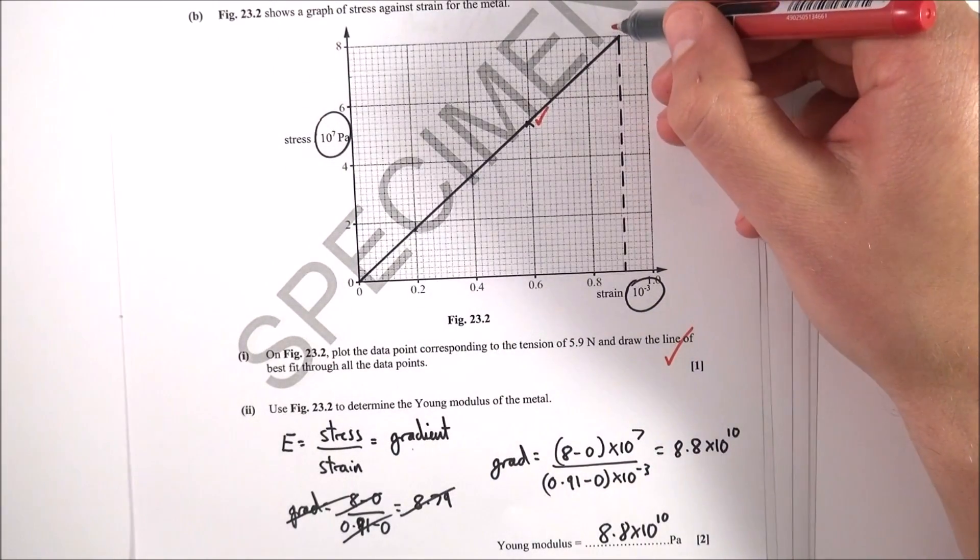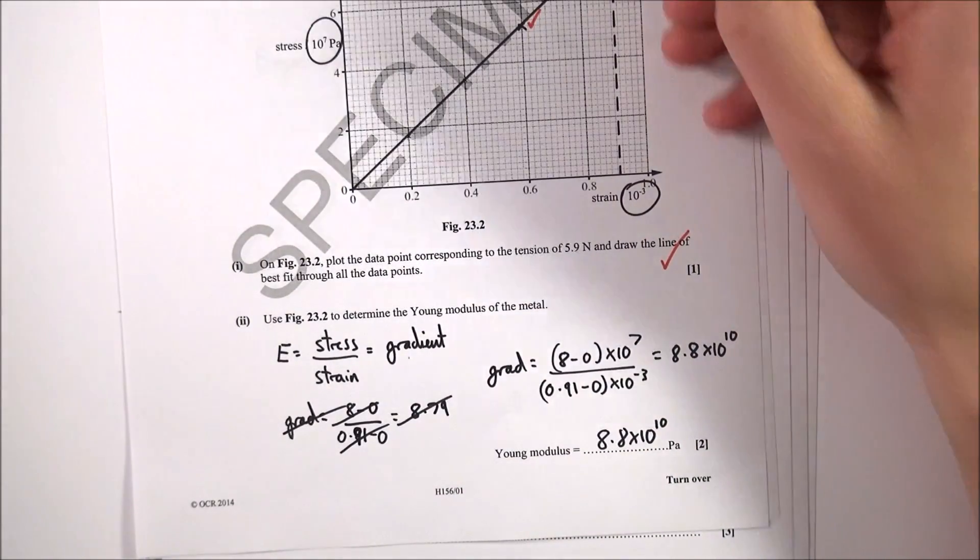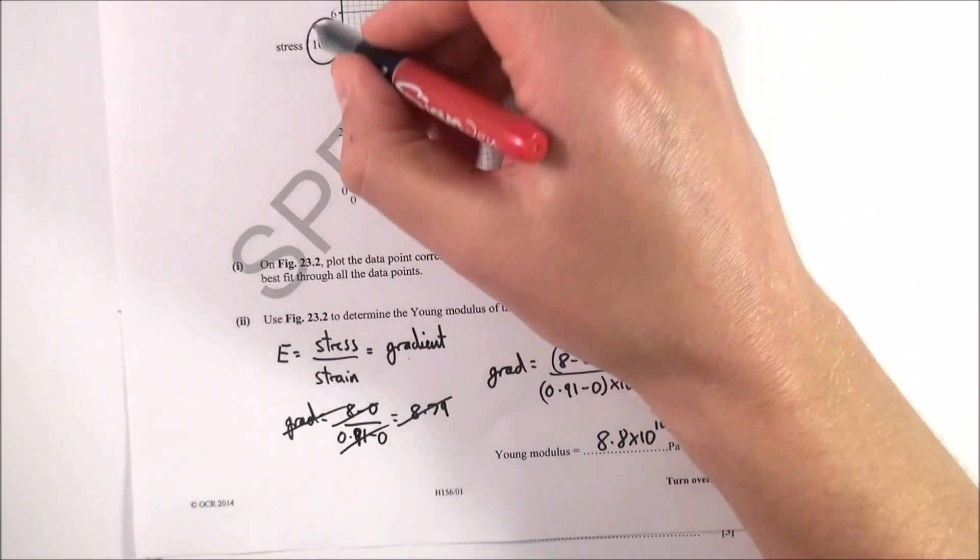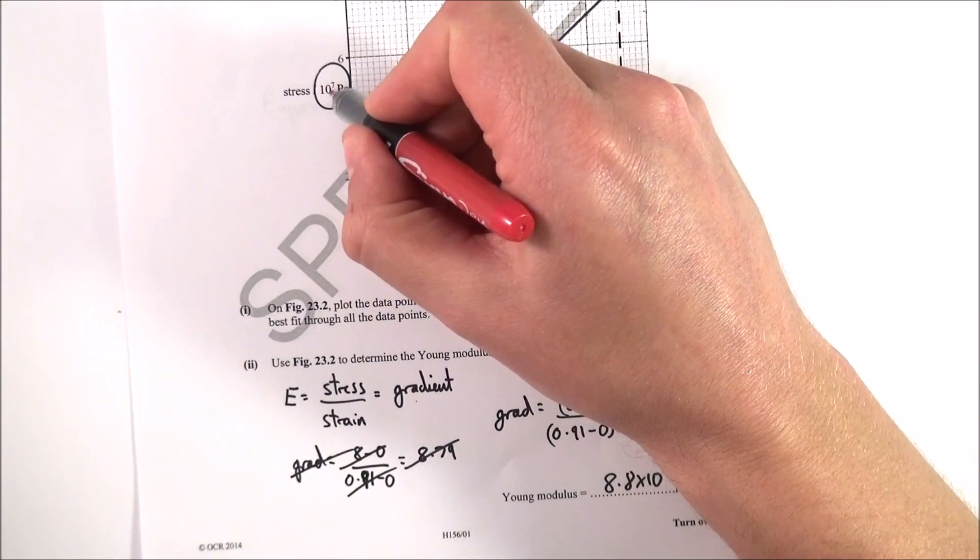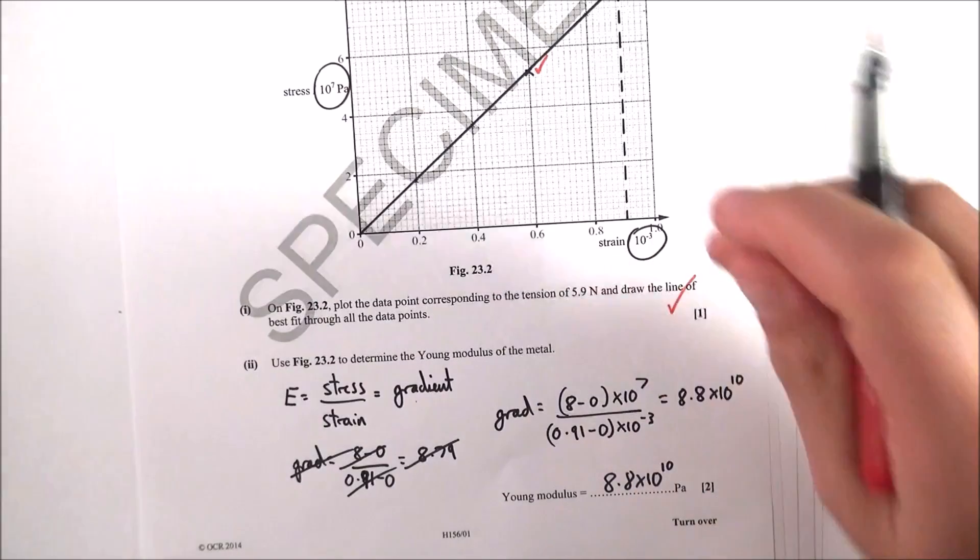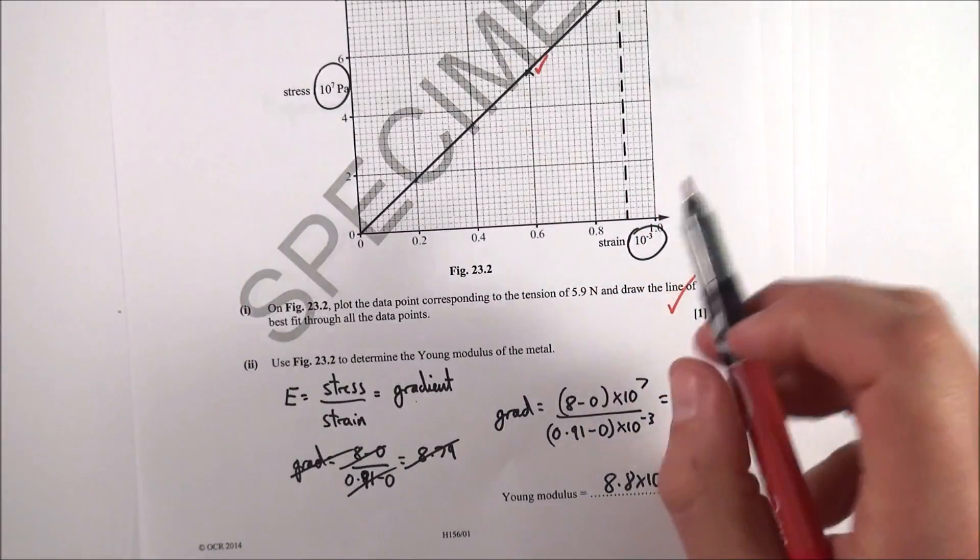The triangle effectively goes from this point down here. I worked it out as going from 8 to 0, which is 8 minus 0 times 10 to the 7, because we've got the stress given in 10 to the 7 pascals. The strain is 10 to the minus 3. You've always got to look at the graph and the units because there'll always be something tricky there.